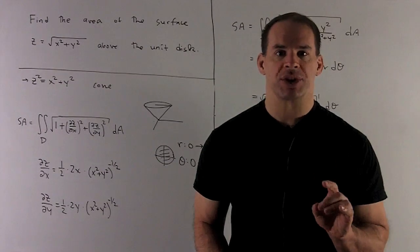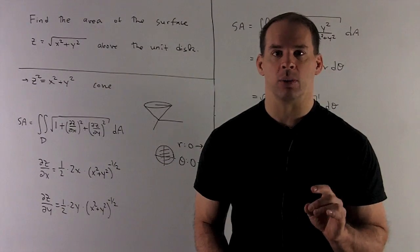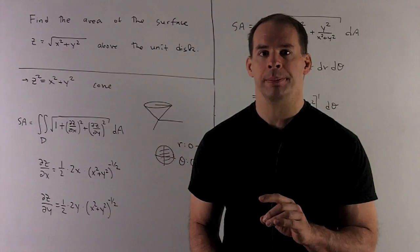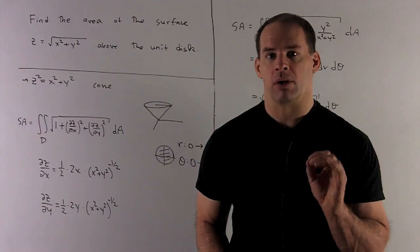First, I square both sides, gives me z squared equals x squared plus y squared. That's the formula for a right circular cone.